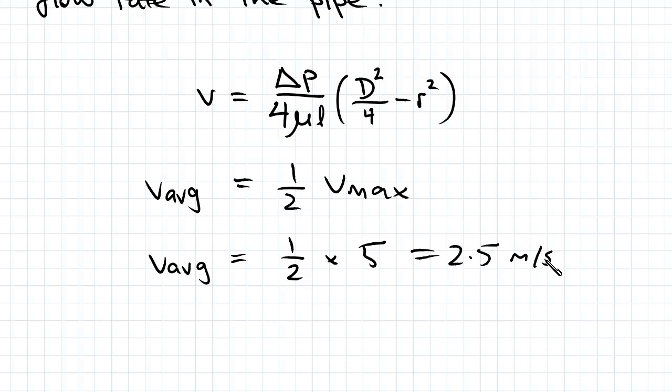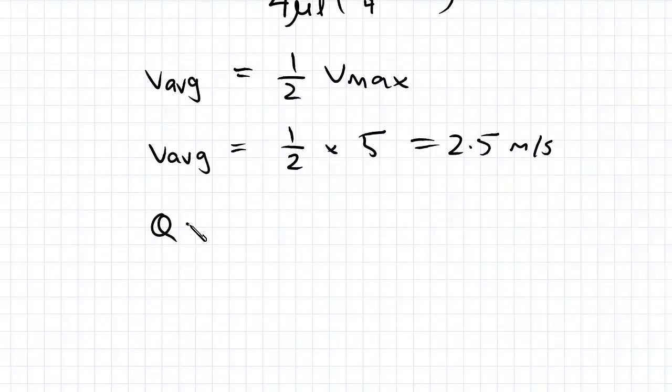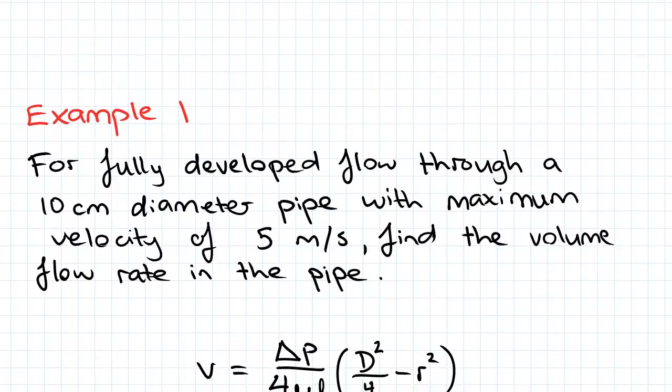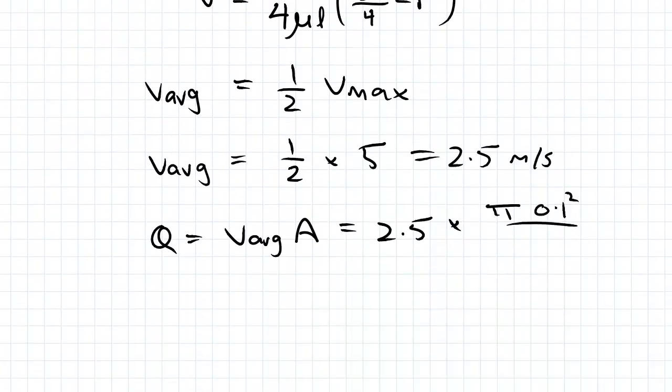Using our average velocity, we multiply by the area of the pipe to get the flow rate. Q equals V average times area, which is 2.5 times pi times 0.1 squared divided by 4, which is 0.0196 m cubed per second.